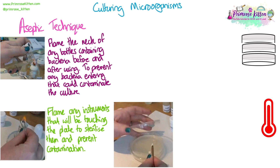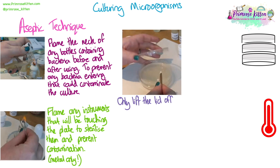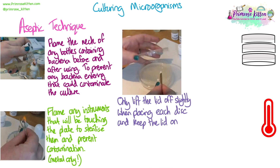Flaming is only to be done with metal instruments. If you have plastic instruments, they should be sterile — take them sterile from a packet, use them, then put them straight into disinfectant or alcohol. When opening the lid to put anything onto the plate — to pour your bacteria or place your discs — lift the lid only slightly at an angle, place your disc or pour your culture, then put the lid back on straight away. Keep the lid on wherever possible to prevent contamination from bacteria or other microbes in the air.